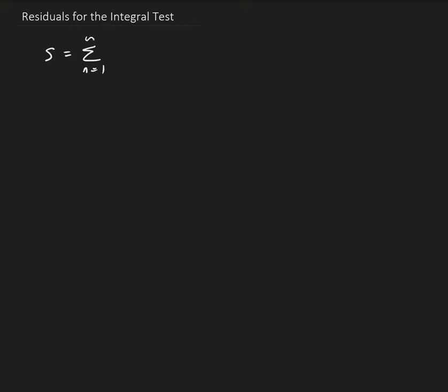Let's assume we're starting from 1. Whatever that series is converging to, we're going to call S. And S of n represents the first n partial sums. So S is A1 plus A2 plus A3 and so on, and S of n would be A1 plus A2 plus A3 dot dot dot up to A of n.